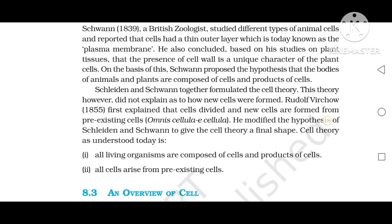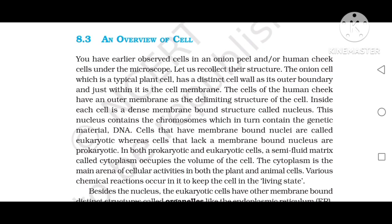An overview of a cell. You have earlier observed cells in an onion peel and human cheek under the microscope. The onion cell, a typical plant cell, has a distinct cell wall as its outer boundary, and just within it is the cell membrane. The cell of the human cheek has an outer membrane as the delimiting structure. Inside each cell is a dense membrane-bound structure called the nucleus, which contains chromosomes, which in turn contain the genetic material DNA.